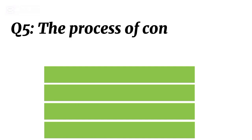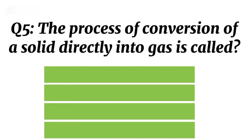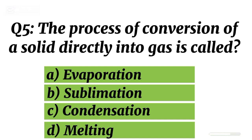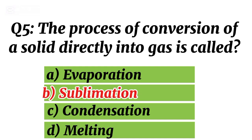Question 5. The process of conversion of a solid directly into gas is called? Correct option B. Sublimation.